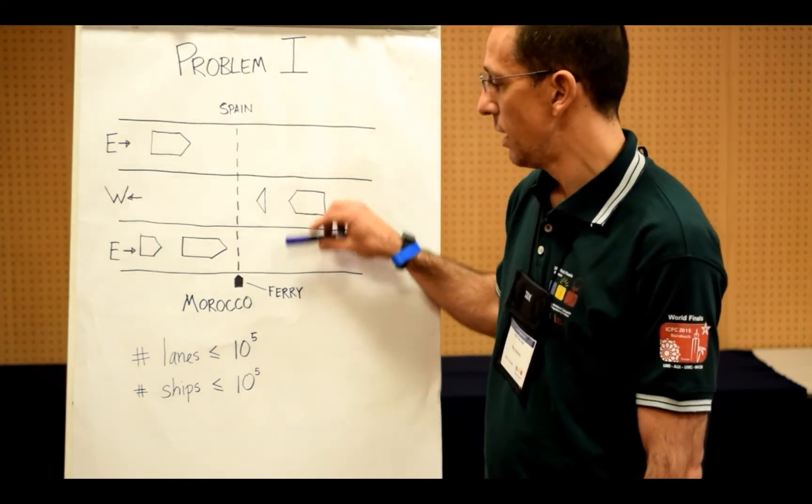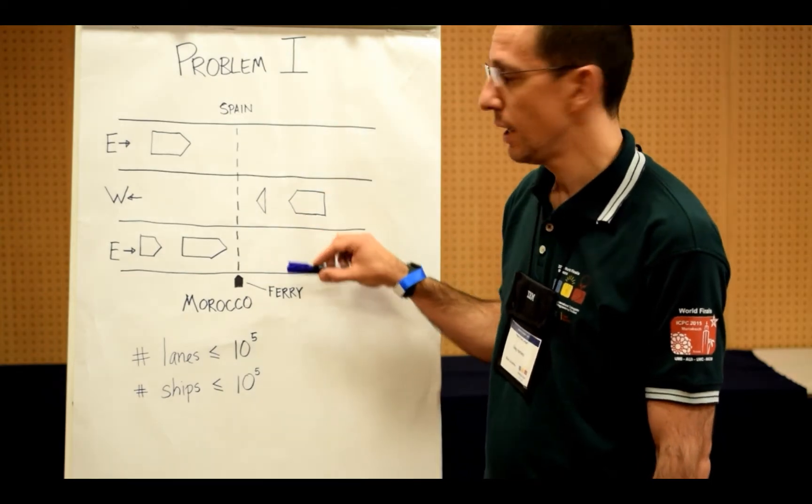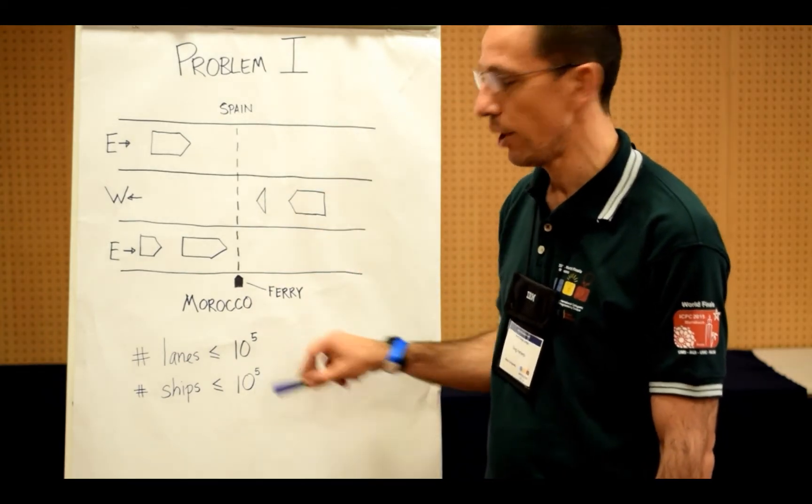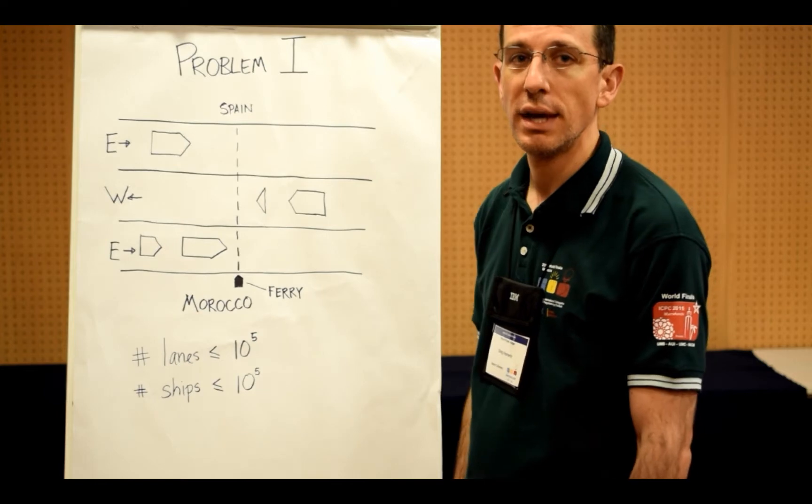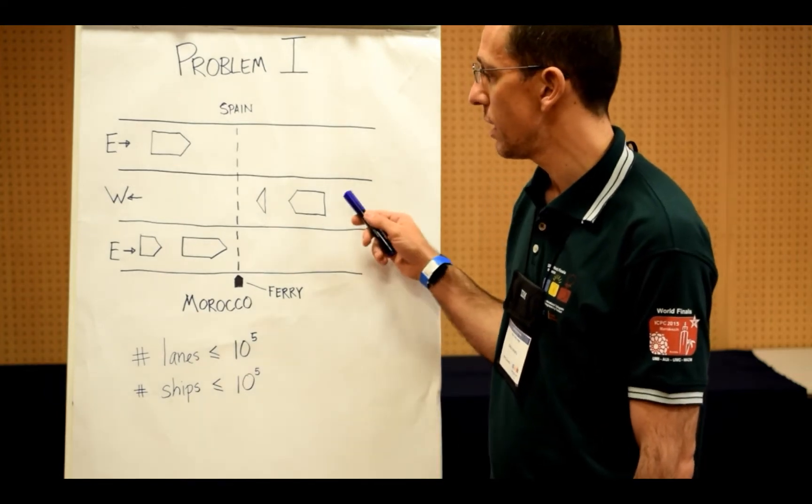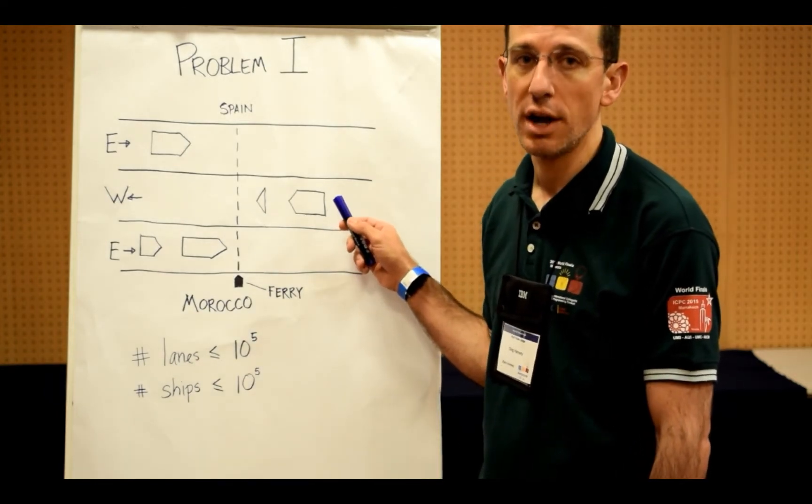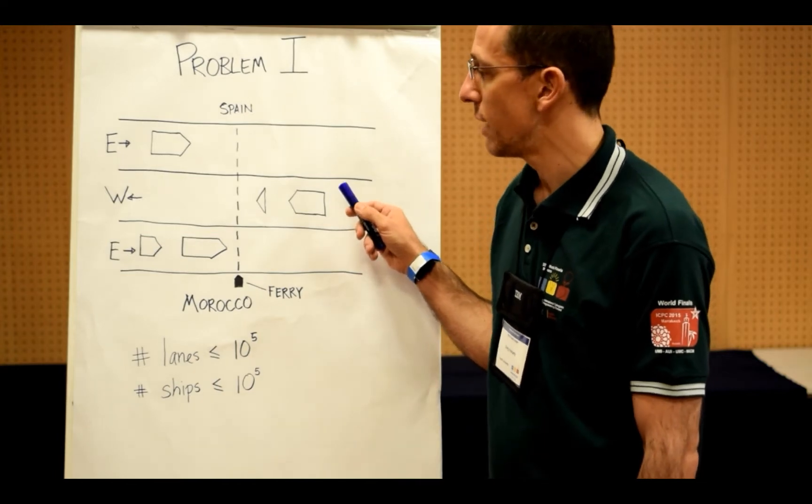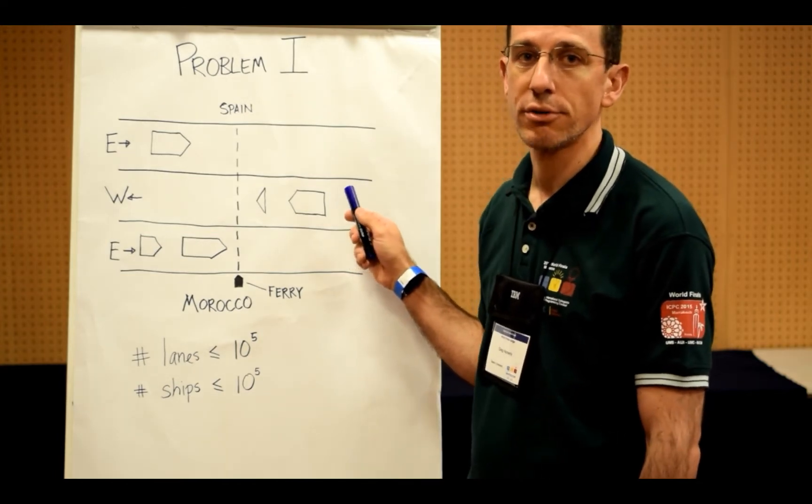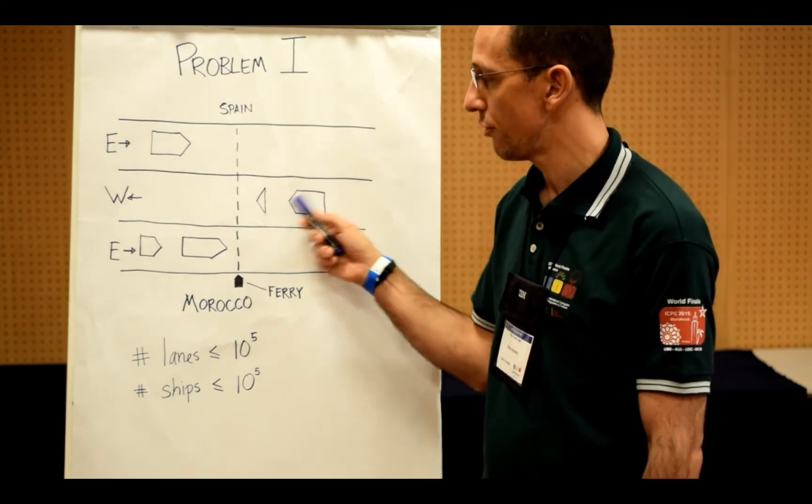You're given up to 10,000 lanes, and in those lanes there will be a total of up to 10,000 ships. You're given the velocity of all the ships, which is constant and the same for all ships, and you're given the position and length of all ships.